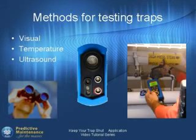Traps can be tested using one of three methods. With SDT's new SDT 270, you can do all three with one instrument at the same time: visual testing, temperature testing, and ultrasonic testing. When testing traps using these methods, it is equally important to know your surroundings and pay attention to safety. Serious burns can result from carelessness when working in and around steam systems. Know the system and understand how the traps function.